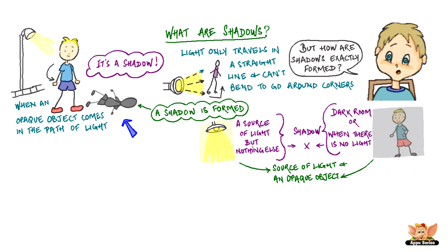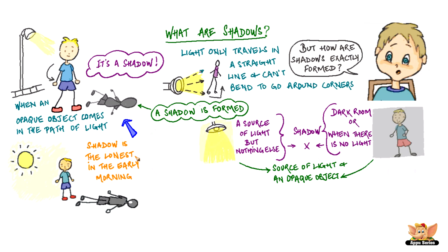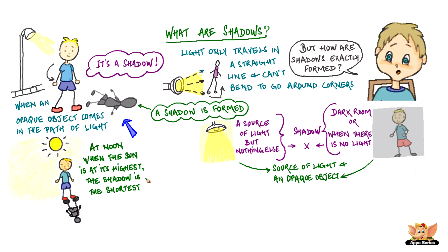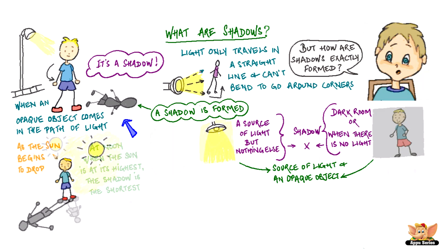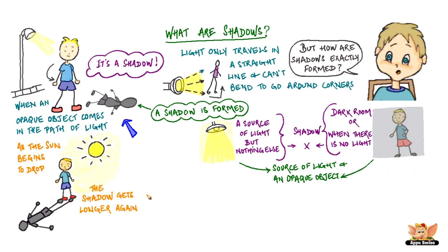If you observe your shadow at different times in the day, you will see that your shadow is the longest in the early morning and in the late afternoon. At noon, when the sun is at its highest point, the shadow is the shortest. As the sun begins to drop, the shadow gets longer again.